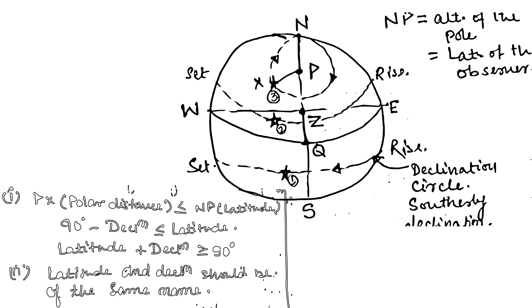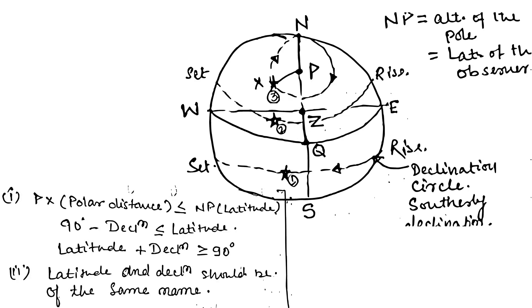Now comes the second condition. For a body to be circumpolar, the polar distance should be less than or equal to NP. Here, Px is the polar distance, which should be less than or equal to NP. NP is the latitude.